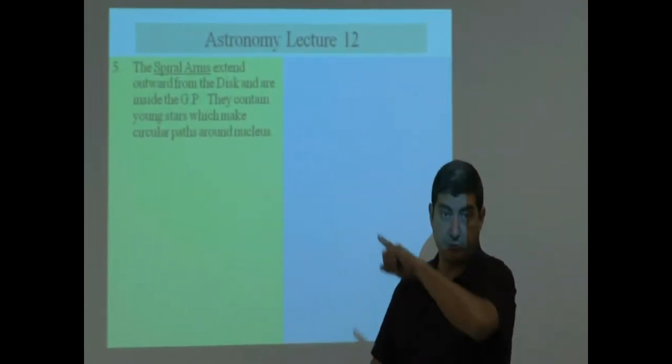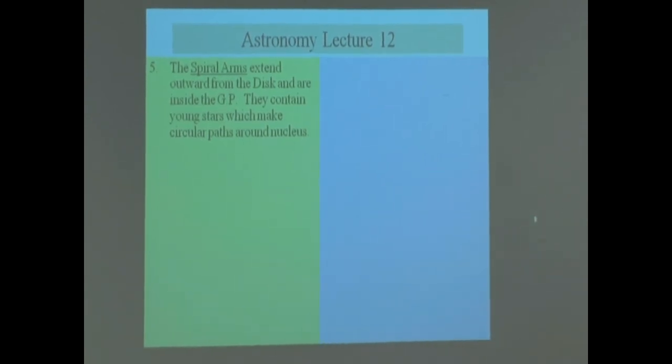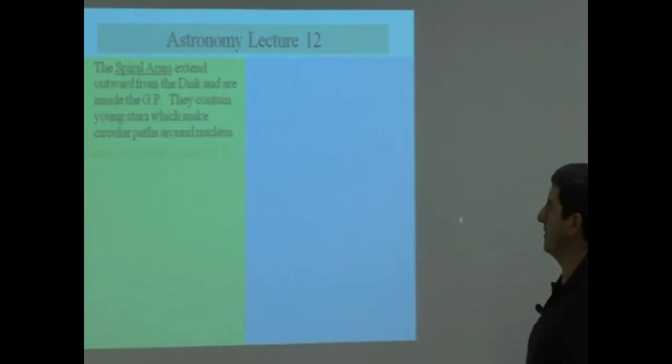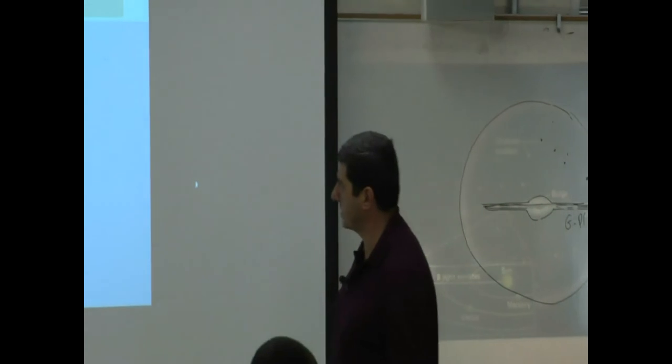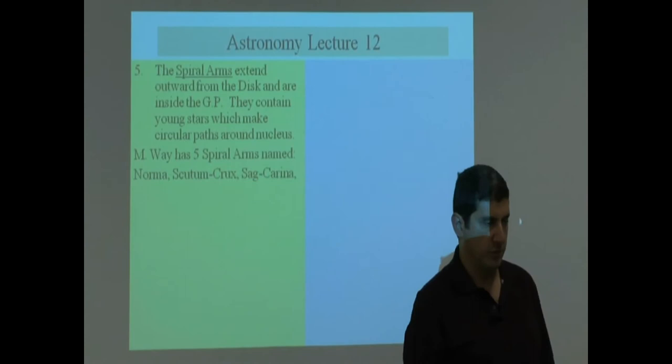So the sun has no special place in the Milky Way, and the Milky Way has no special place in the universe. No particular special spot. The spiral arms, which is what I showed you earlier, extend outward from the disk and are inside of the galactic plane. They contain young stars which make circular paths around the nucleus. The Milky Way has five spiral arms.